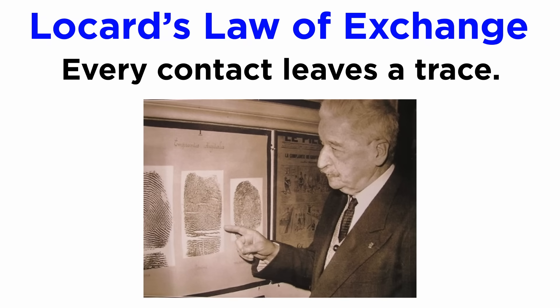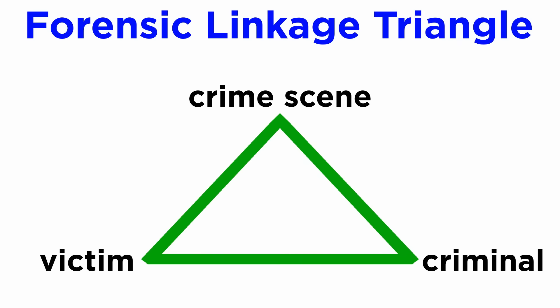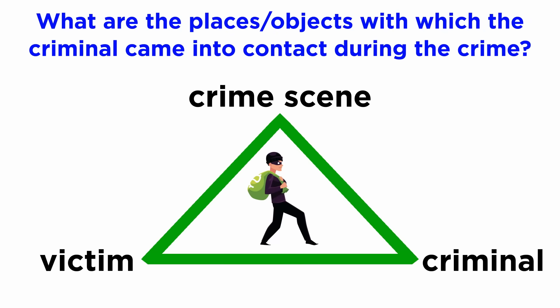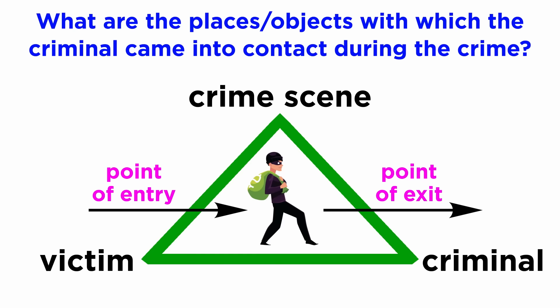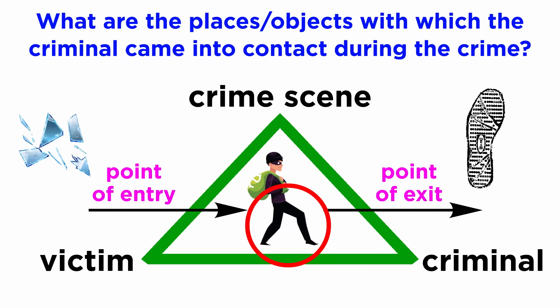If the evidence is not detected rapidly, the law of progressive change kicks in, leading to failure in establishing the linkage. This principle forms the foundation of CSI—identification will not happen if the linkage is not established first. Establishing linkage depends on correctly identifying what places or objects the criminal contacted. The point of entry will carry evidence of the criminal's entry, and the point of exit will carry evidence of their exit, such as footprints. Glass shards may be found at the point of entry in a burglary, and this glass dust might also be recovered from the suspect's clothes, footwear, or any injury caused by the act.